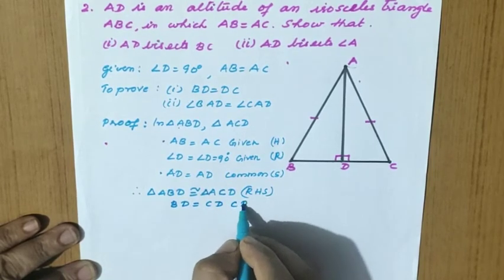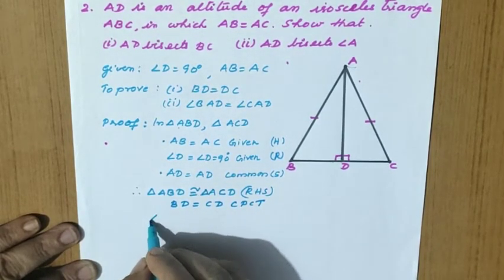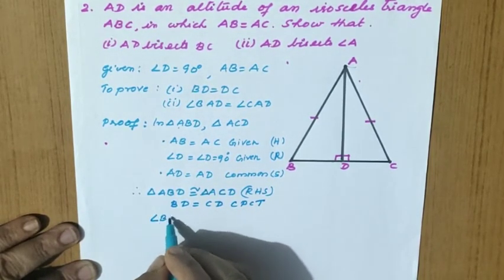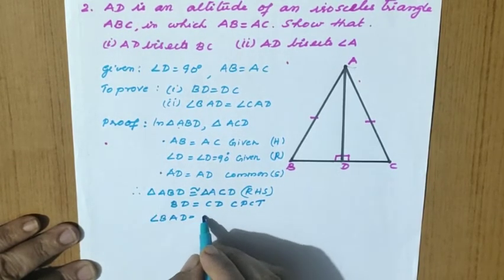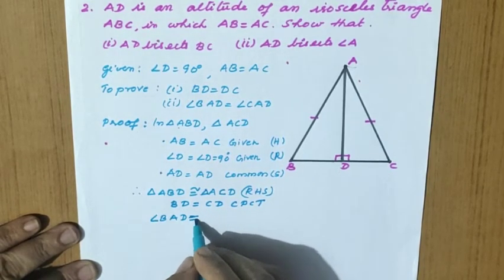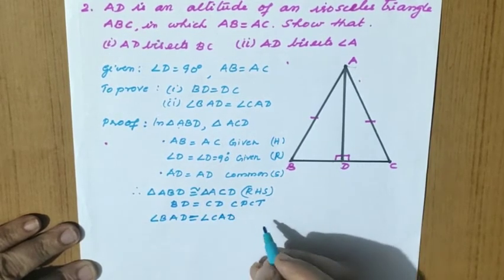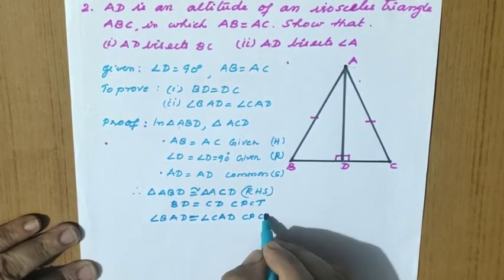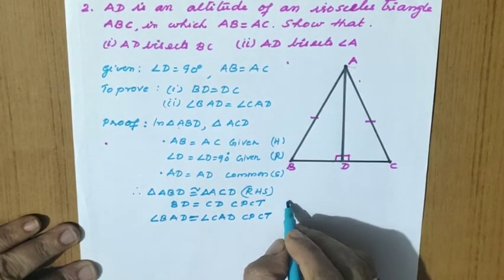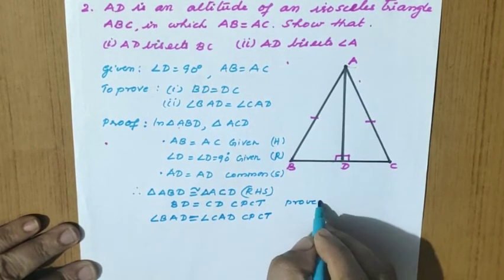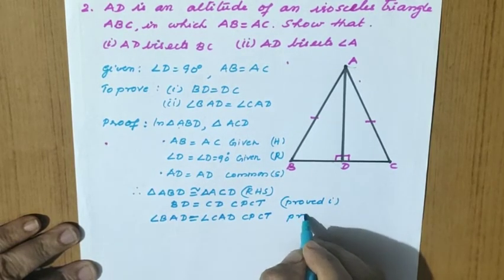By CPCT: BD equal to CD — that is proved part one. And angle BAD equal to angle CAD — by CPCT again. So both parts are proved.